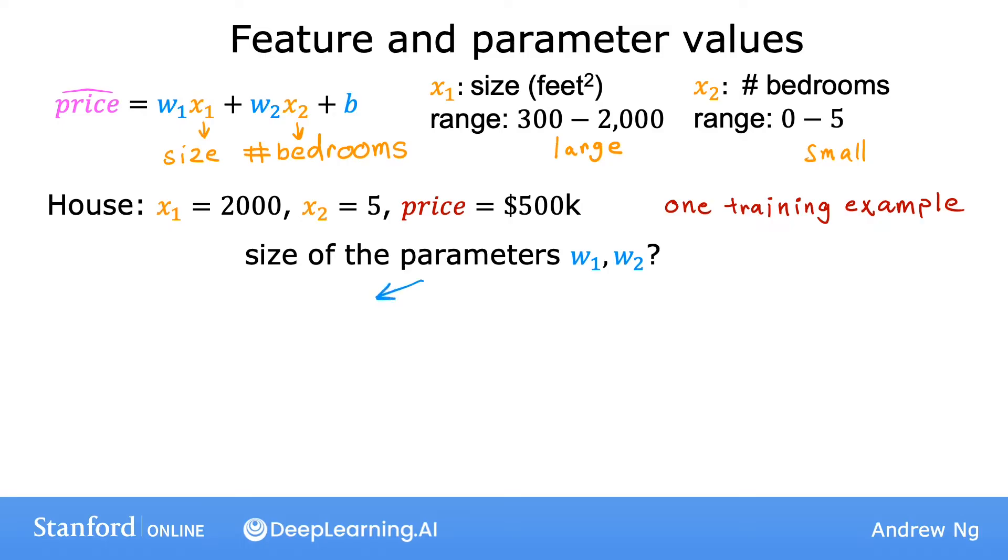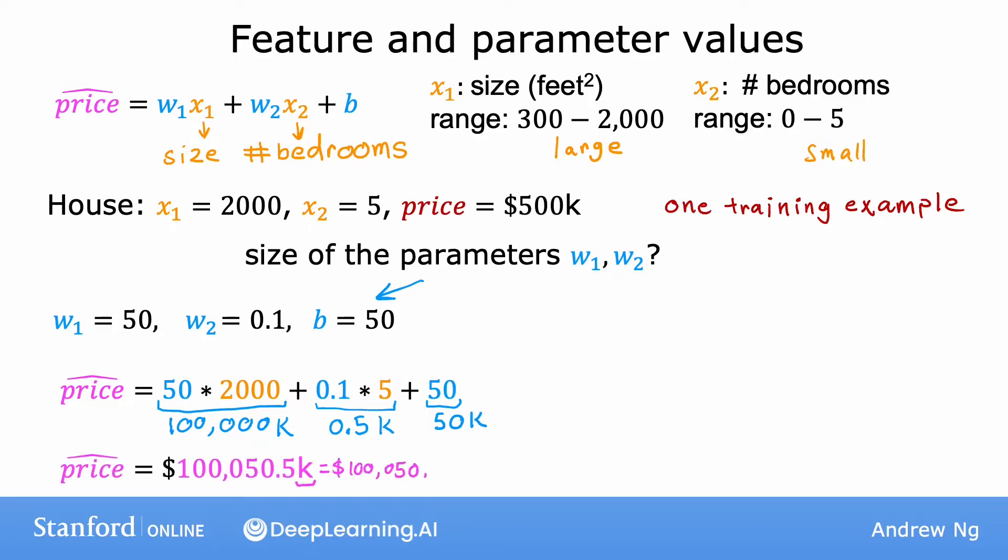Let's look at one possible set of parameters. Say w1 is 50, and w2 is 0.1, and b is 50. In this case, the estimated price in thousands of dollars is 100,000k plus 0.5k plus 50k, which is slightly over $100 million. That's clearly very far from the actual price of $500,000, so this is not a very good set of parameter choices for w1 and w2.